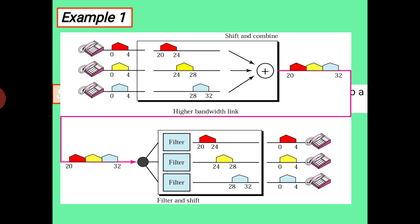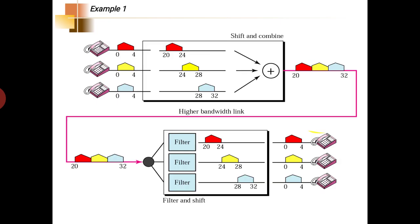It looks like a single link, like a single voice channel, but the channels are separated by a 4 kilohertz gap. At the demultiplexer end, indicated by a dark circle, it separates each modulated signal: 20 to 24, 24 to 28, and 28 to 32. These modulated signals are then separated from the carrier wave, and the original 4 kilohertz signal is passed to the user. In this way, communication is achieved with frequency division multiplexing.